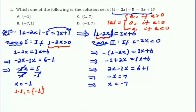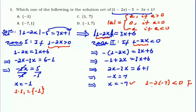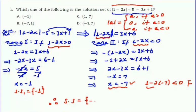Minus 7 is the candidate solution for Case 2, but we must verify. Substituting minus 7: 1 minus 2 times minus 7 equals 1 plus 14, which is not negative — it is positive. So x equals minus 7 cannot satisfy this absolute value; if substituted, the equation becomes false. Therefore the only solution set for this absolute value is minus 1, and our answer is A.